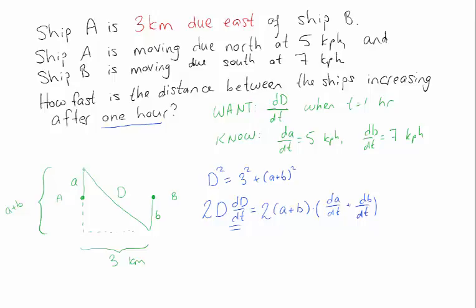So another thing we know is that if A has been moving due north at 5 kilometers per hour for one hour, A is 5 kilometers. Likewise B is 7 kilometers, and we know how to relate A, B, and D. D is the positive square root of 9 plus (5 plus 7) squared, which is the square root of 153.